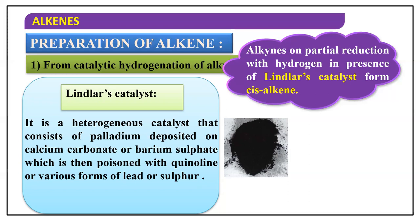We use a term called a poison because we do not want alkynes to get converted to alkanes — that would be complete reduction. We want the catalyst to only partially reduce alkynes to alkenes. To reduce the efficiency of the catalyst, we use a catalytic poison — quinoline, lead, or sulfur — which reduces the effectiveness of the catalyst so that it behaves only as a partial or mild reducing agent, not as a strong reducing agent.